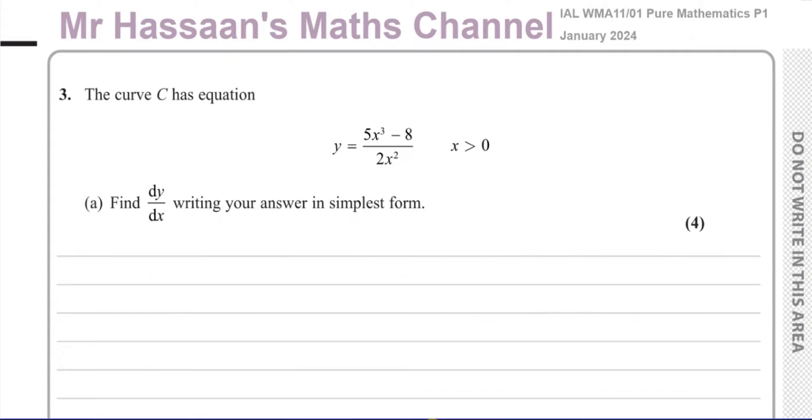This question here, part A is just a question on differentiation, and part B is one of the applications of this differentiation. So we want to find dy/dx. We have y equals 5x cubed minus 8 over 2x squared, and x is greater than 0, x is always positive.